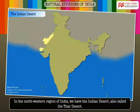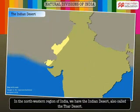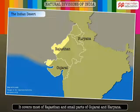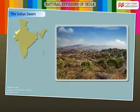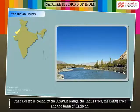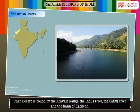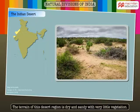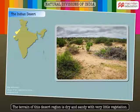Moving to the northwestern region of India, we have the Indian Desert, also called the Thar Desert. It covers most of Rajasthan and small parts of Gujarat and Haryana. It is bound by the Aravalli Range, the Indus River, the Sutlej River, and the Run of Kutch. The terrain of this region is dry and sandy, with very little vegetation.